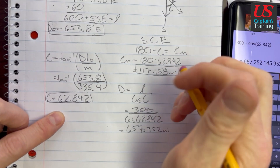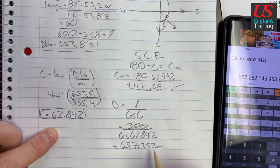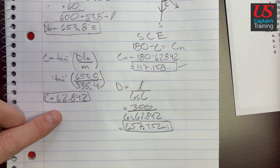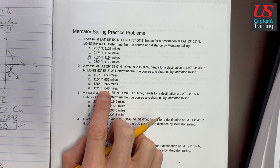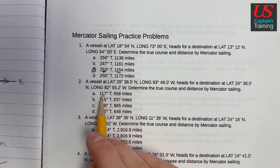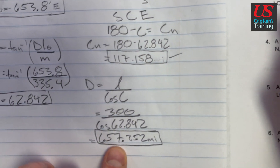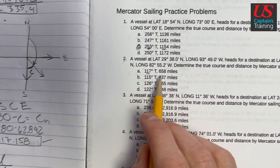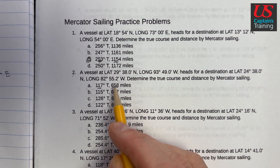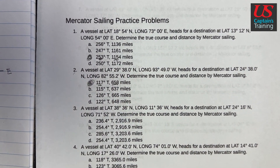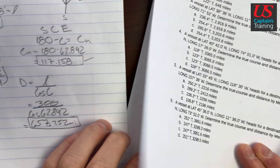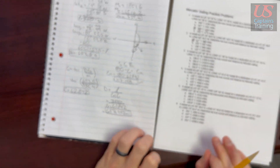Let's see if the answer shows up. For problem two we have 117 degrees here, and a distance of 657.2 — that's pretty close to 658.2. The closest answer is 658, which is answer choice A. That's Mercator Sailing practice problem two.